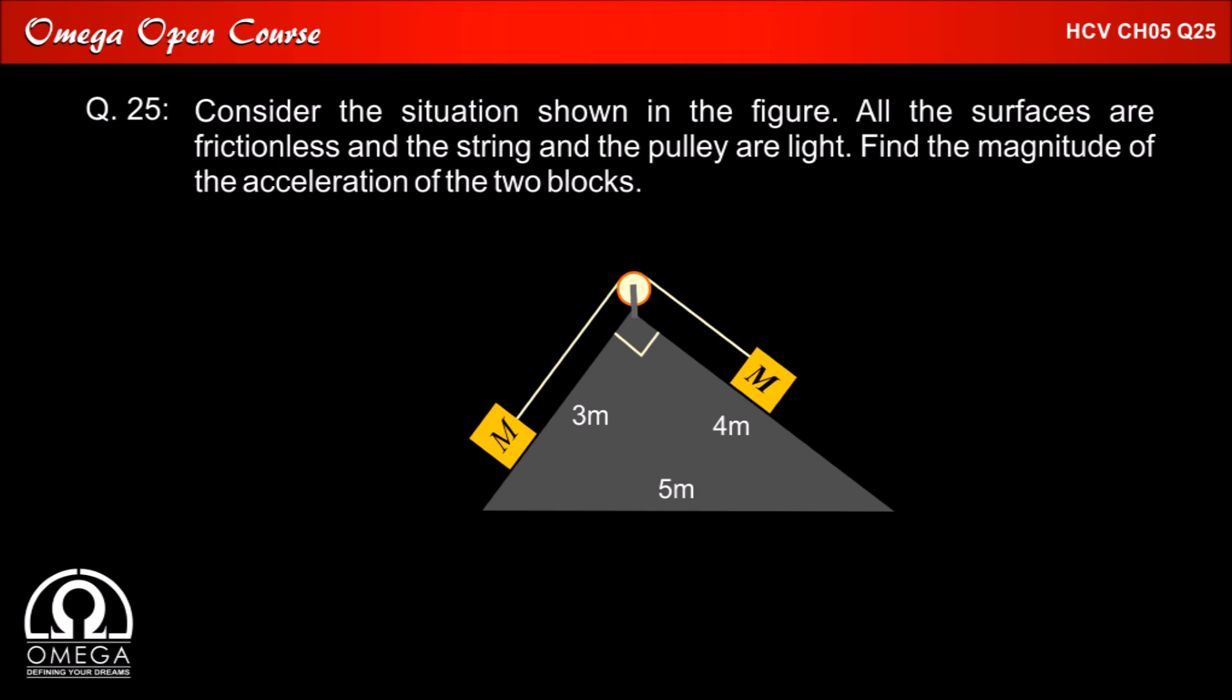As we know that 3, 4 and 5 are Pythagorean triplets, the wedge must be in the shape of a right-angled triangle and the two inclines must be perpendicular to each other.